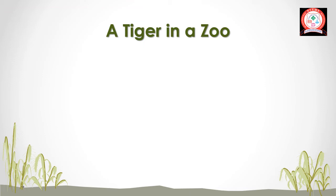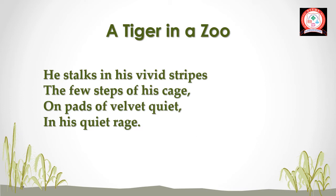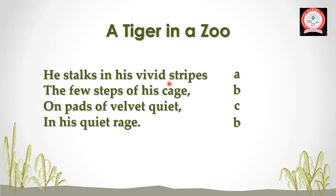Let's understand the rhyming scheme and poetic devices of this poem. In the first stanza: 'stripes, cage, quiet, rage' — cage rhymes with rage, giving the pattern A B C B. This same rhyming scheme is maintained throughout the entire poem. For poetic devices: in 'He stalks in his vivid stripes,' the 'st' sound is repeated in 'stalks' and 'stripes' — this is alliteration. In 'on pads of velvet quiet,' the pads are compared to velvet — this is a metaphor.